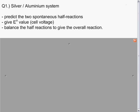For the first example question for electrochemical cells, consider a silver-aluminum system. Locate on the table of half-reactions of reduction potentials both the silver and aluminum reactions. Predict the two spontaneous half-reactions, give the correct E° value (cell voltage) for the overall cell, and then balance the two half-reactions to give the overall reaction.